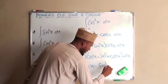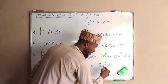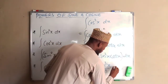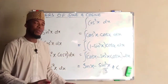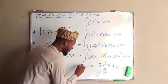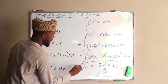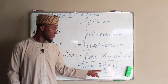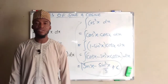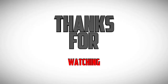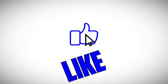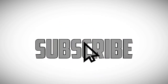Integrating cos X gives sine X, and from problem three the integral of sine squared X times cos X is sine cubed X divided by 3. So the final result is sine X minus sine cubed X divided by 3 plus the constant of integration C. This is how we have integrated cos cubed X. We'll see you next time.